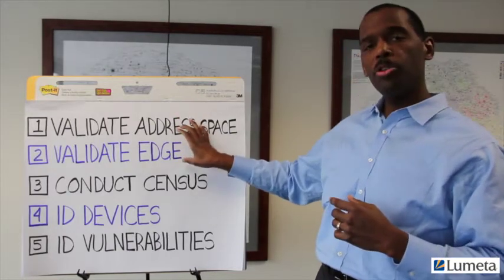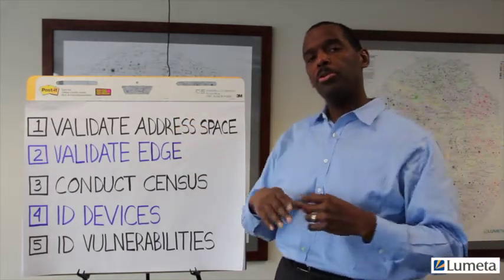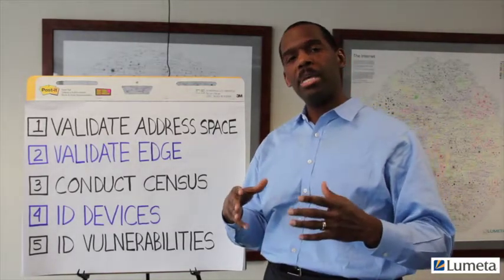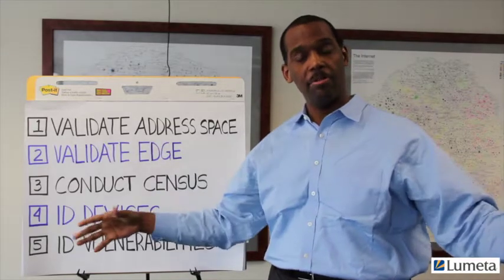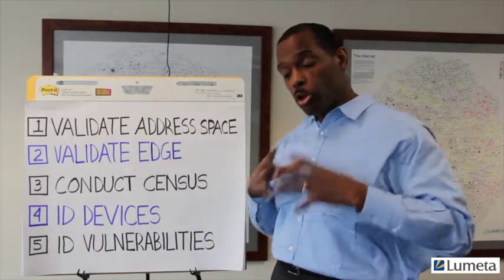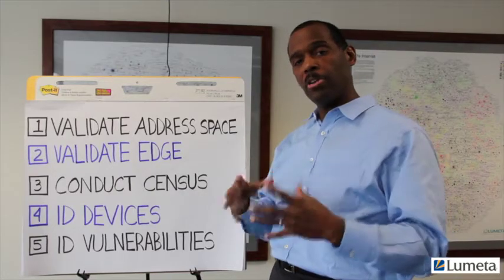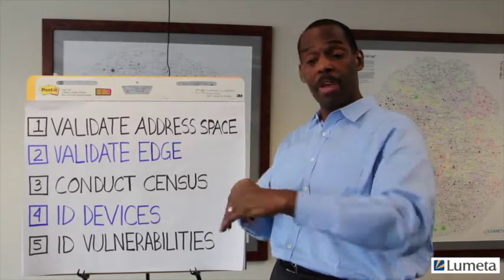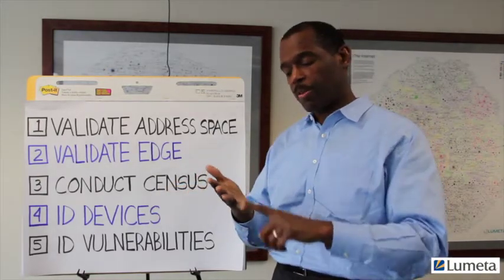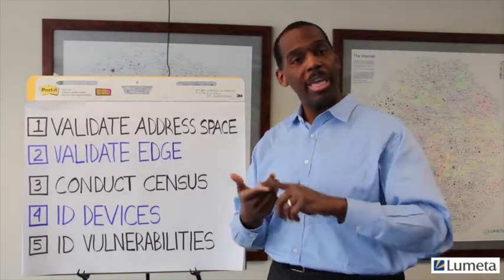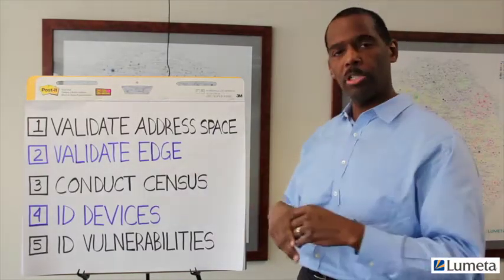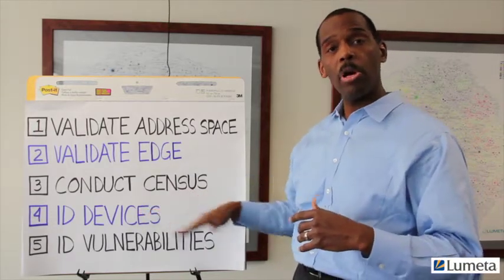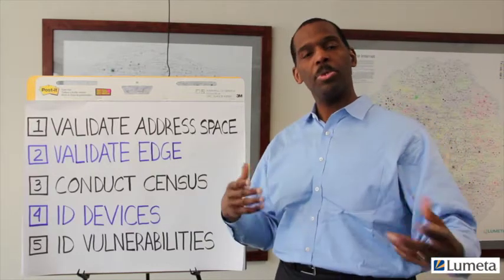After you've done steps one and two, you can migrate to the third phase of the baselining, which is conducting a census of every IP responder in the infrastructure you've now identified. You know the part of the infrastructure you're managing, you know the totality of your address space, and now you have to identify all of the devices — phones, computers, servers, cameras, and other devices — so that you can then do a deeper dive assessment at step four to identify those devices more specifically.